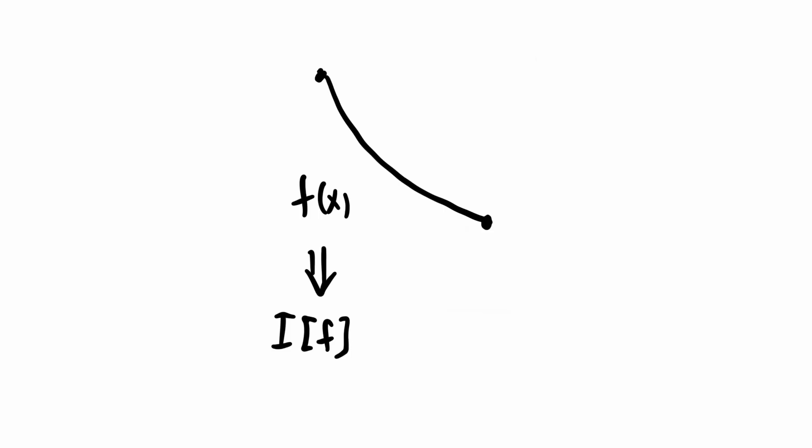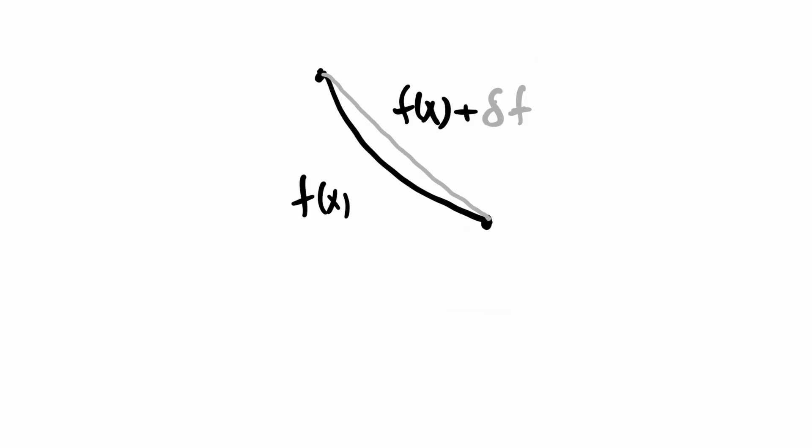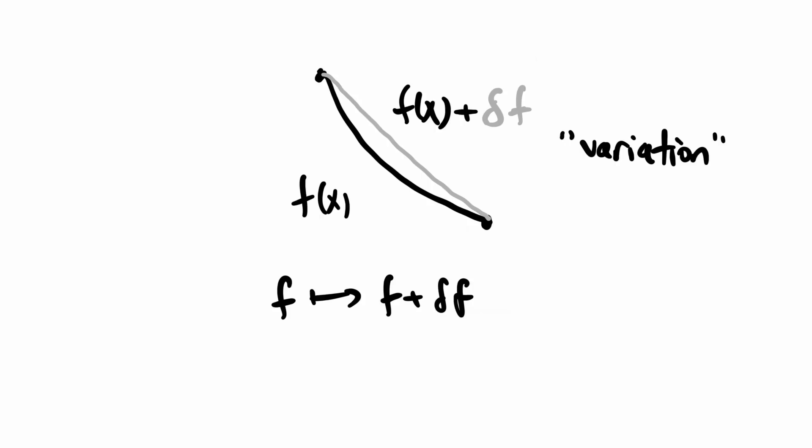This is an idea we can apply to functionals. Assume for a moment that we have a precise definition of what it means to change a function. If a function f minimizes the value of the functional I of f, then that should mean that changing f by an infinitesimal amount should not change the value of I of f. Now we need to figure out what it means to change a function. Clearly, when we say we want to change the function f, we mean that we want to stretch it in some way, which we can do by adding another function, which we call delta f. We call this the variation.